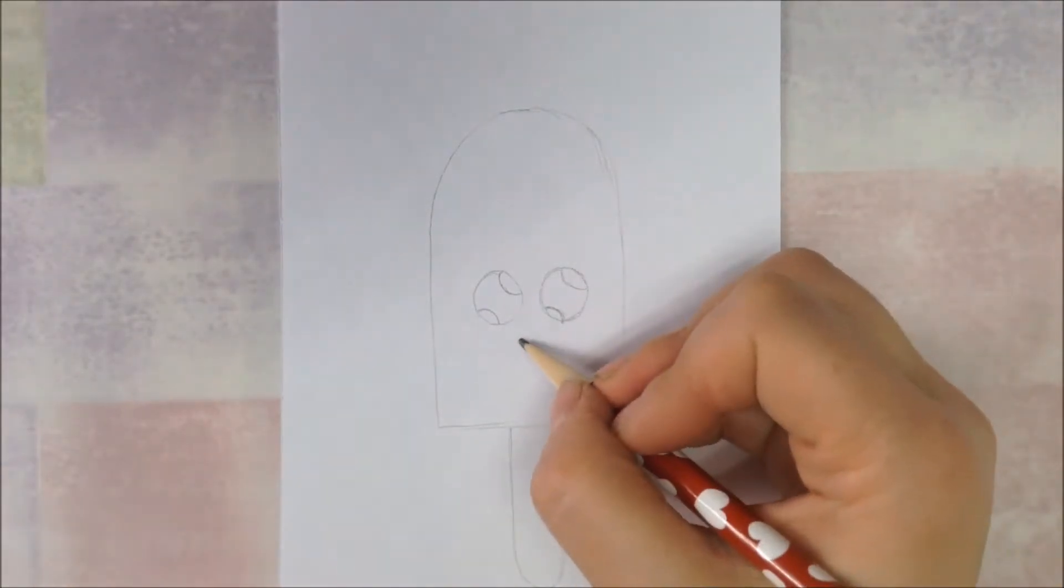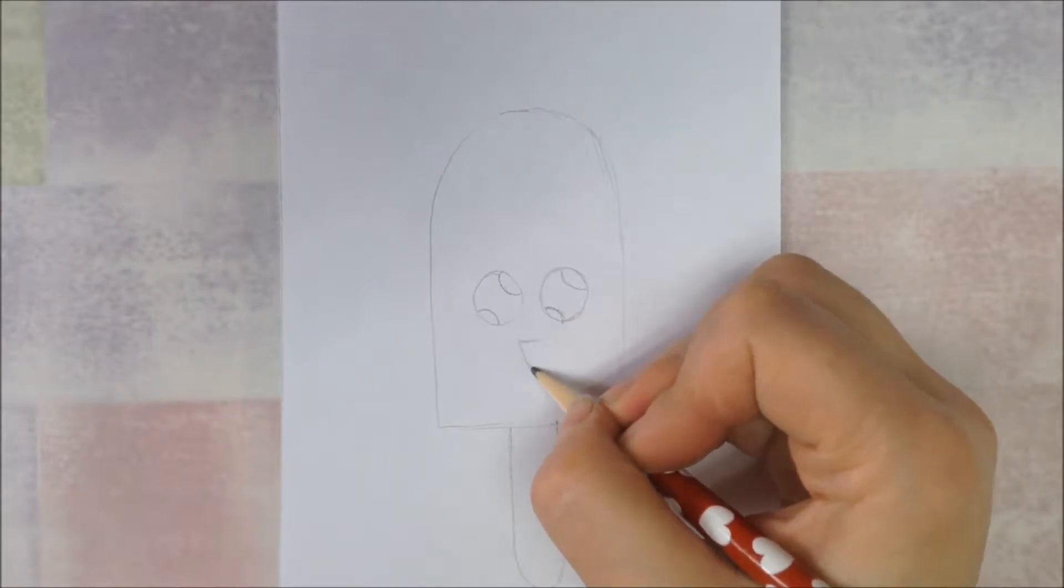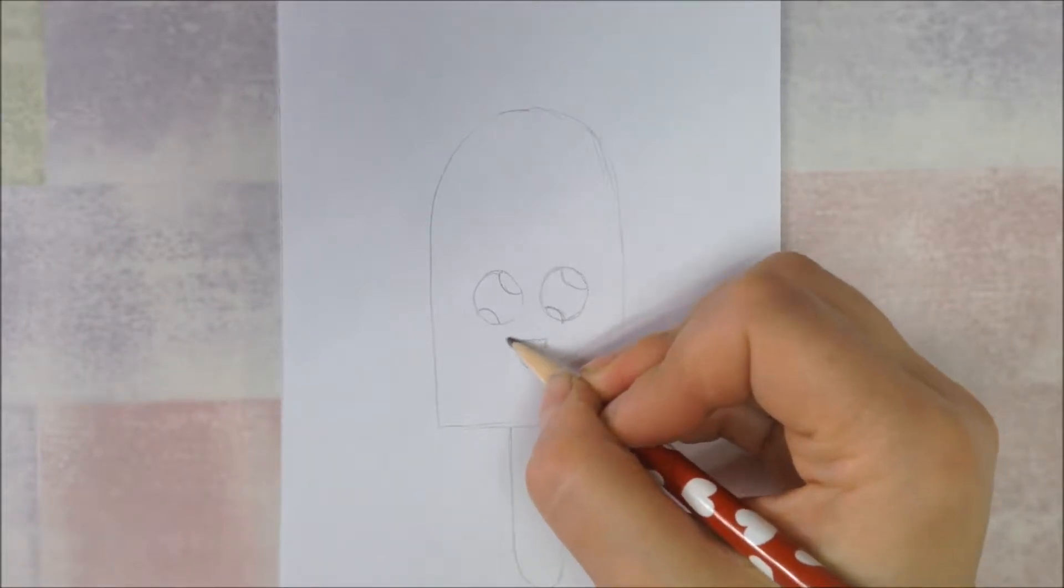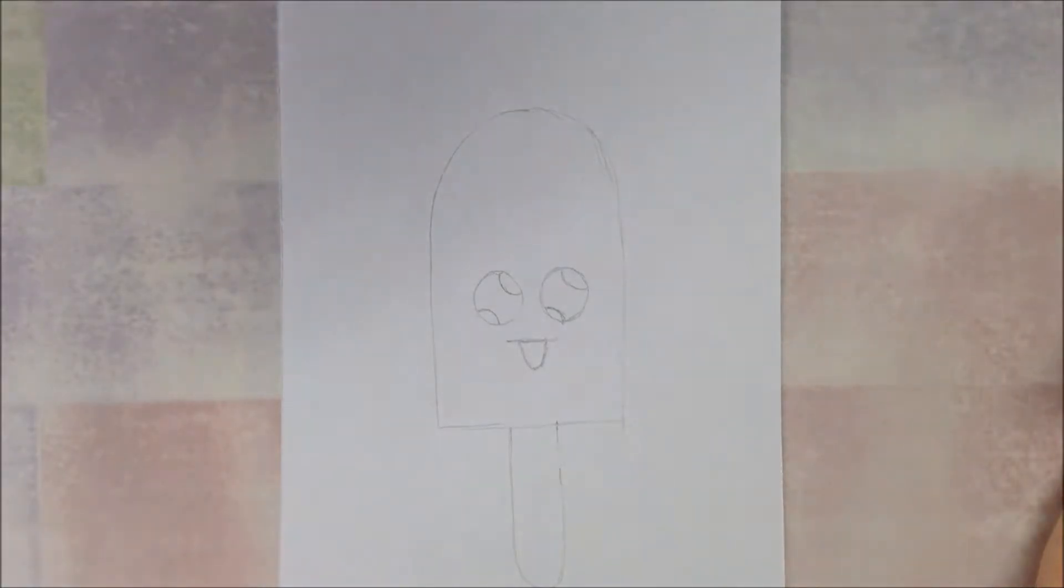For the mouth, we're going to draw a straight line across and a V shape on the bottom, and then extend that straight line a little bit so it looks like our popsicle is smiling or sticking out his tongue.